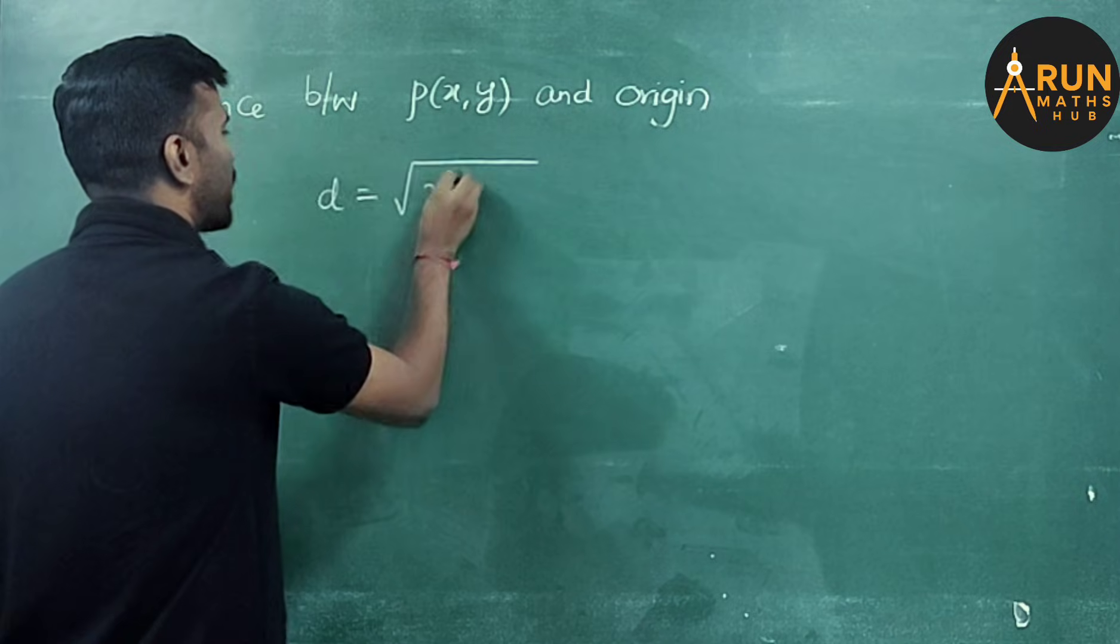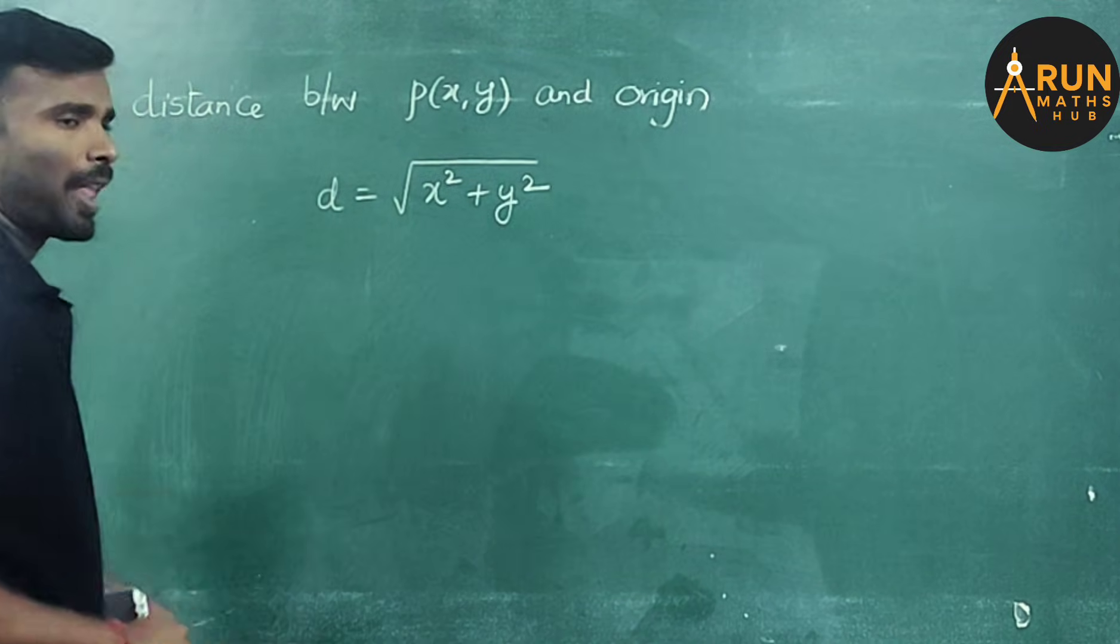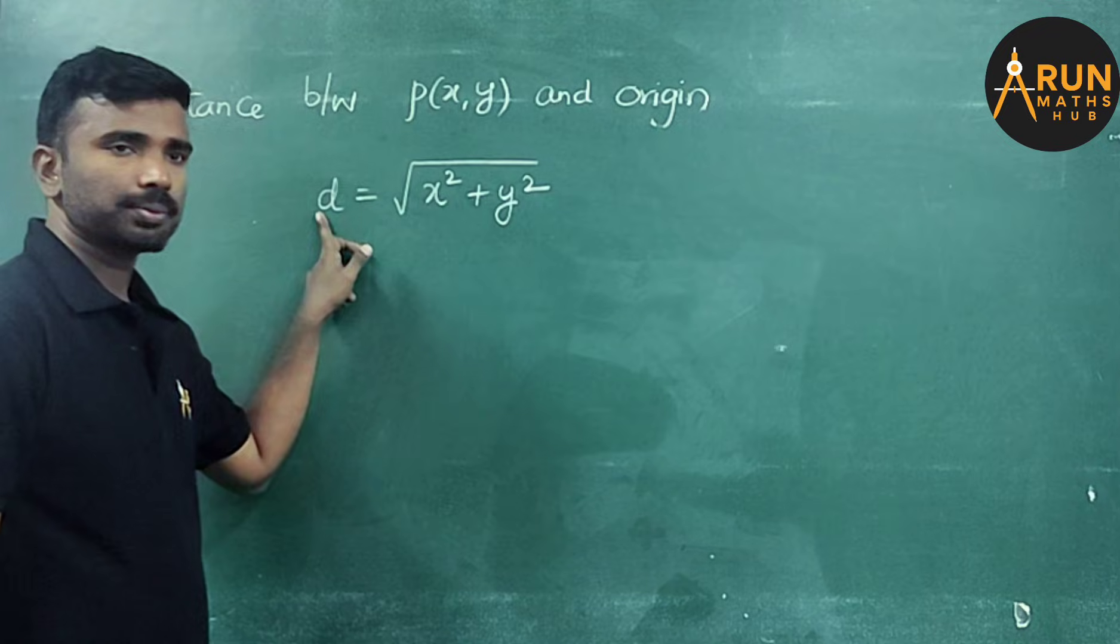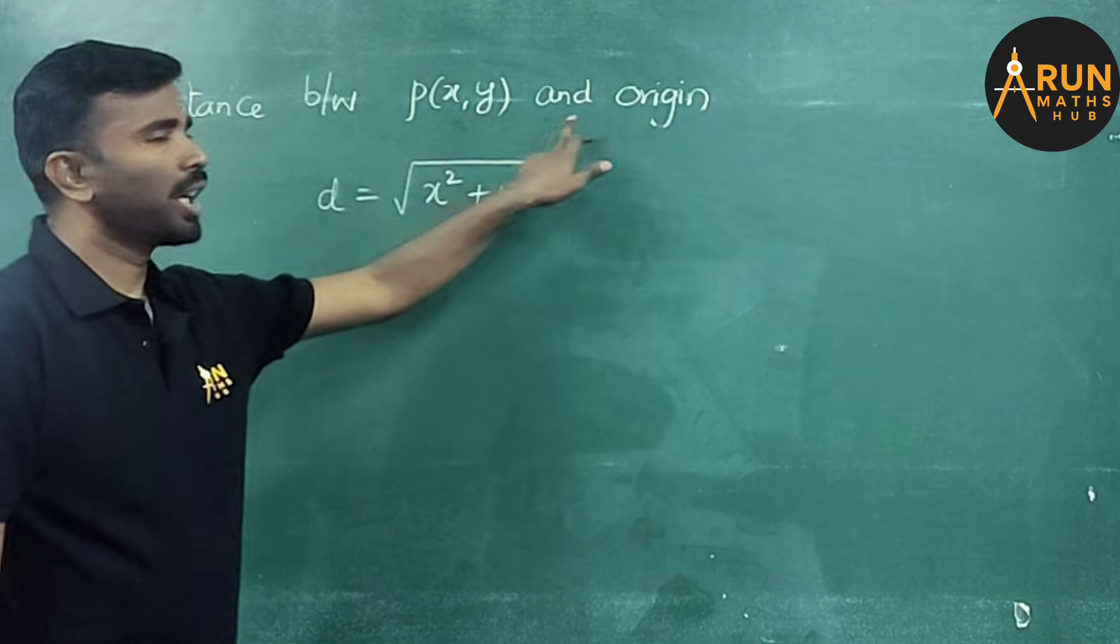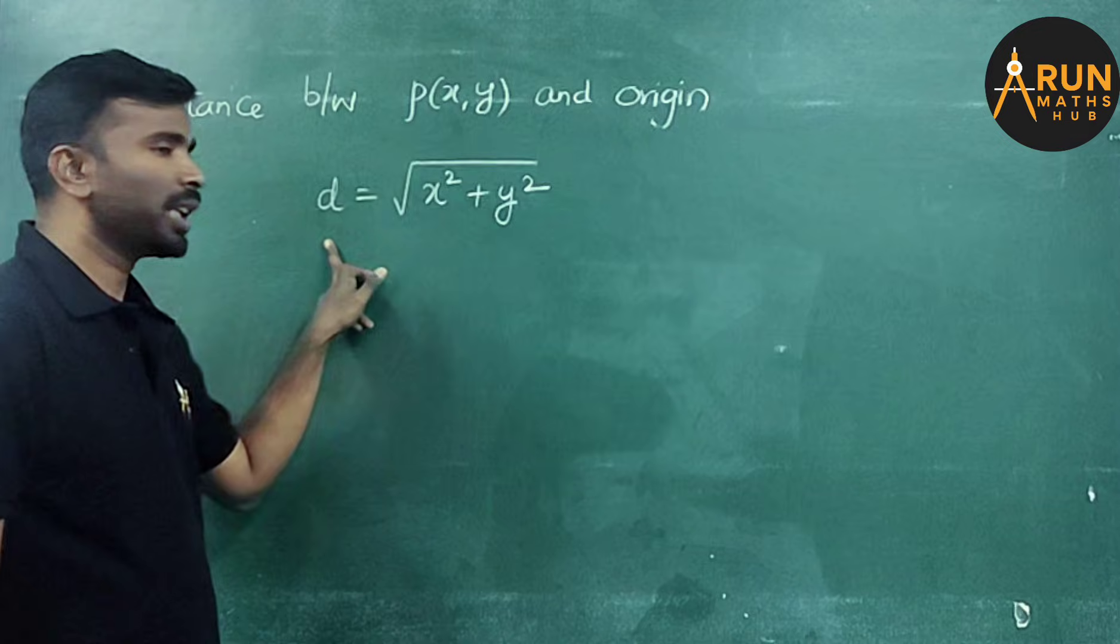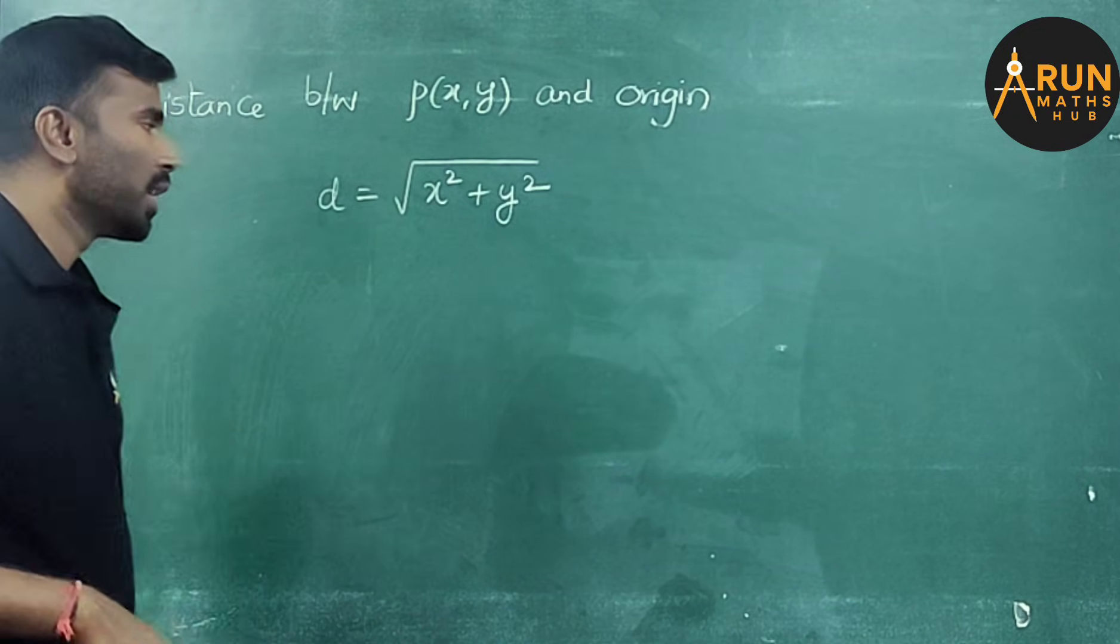The distance between point P of x comma y and origin is given by the formula: d equals square root of square of x coordinate and square of y coordinate. So the distance formula is d equals square root of x square plus y square.